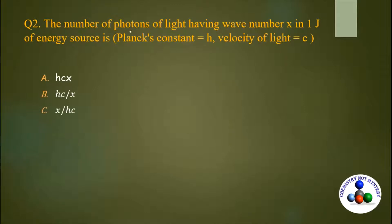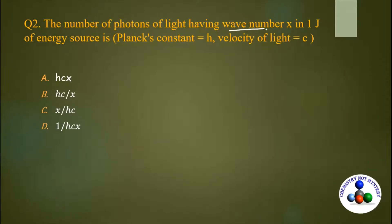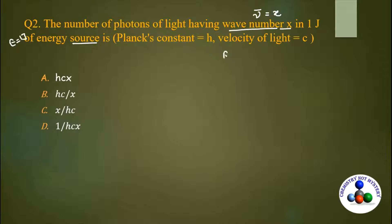Next question: the number of photons of light having wave number x in one joule of energy is? Wave number ν̄ = x is given, and energy of source E = 1 joule is given. First, we need to find the relation between energy and wave number ν̄.